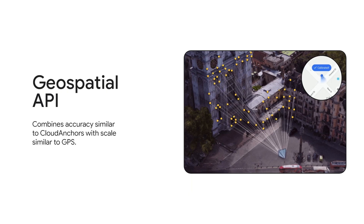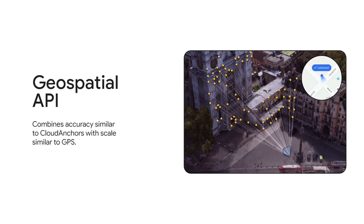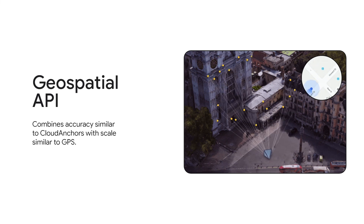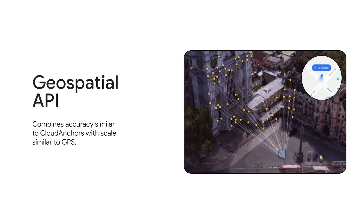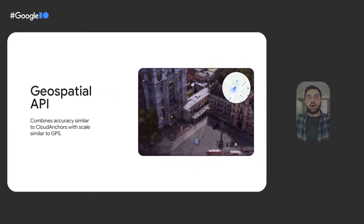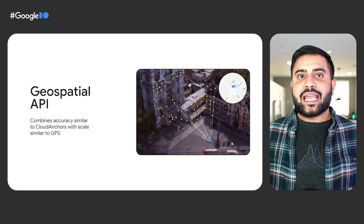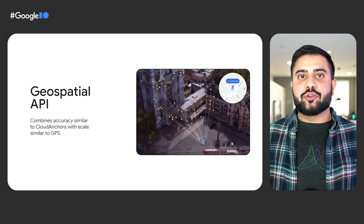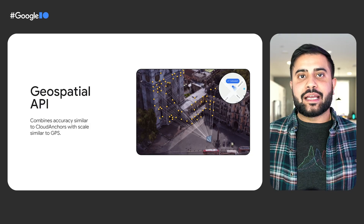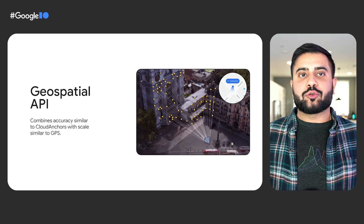Enter visual positioning system and global localization. Thanks to Google's decade-plus of ground-level imagery, we've already mapped the world in immaculate detail. By working in conjunction with location services, we can take a good GPS estimate and make it great, ready for AR. With the ARCore Geospatial API, you are able to remotely attach content to the world and guide users to it, allowing you to create immersive location-based AR experiences almost everywhere we have Street View.